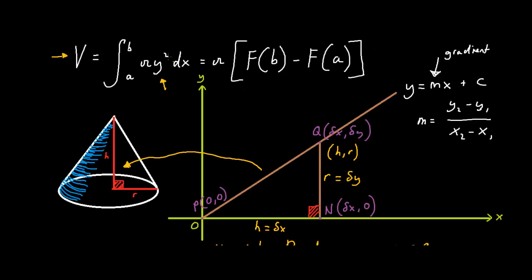We've got y², but we need to know what b and a are in the formula. Let's imagine a vertical line going through Q — call this line x equals b. And a vertical line going through P — call this line x equals a. Looking at this carefully, b is Δx, which is h. And for the line through P, x is actually 0, so a equals 0. Knowing this, we can now begin to integrate and find the formula for volumes of cones.